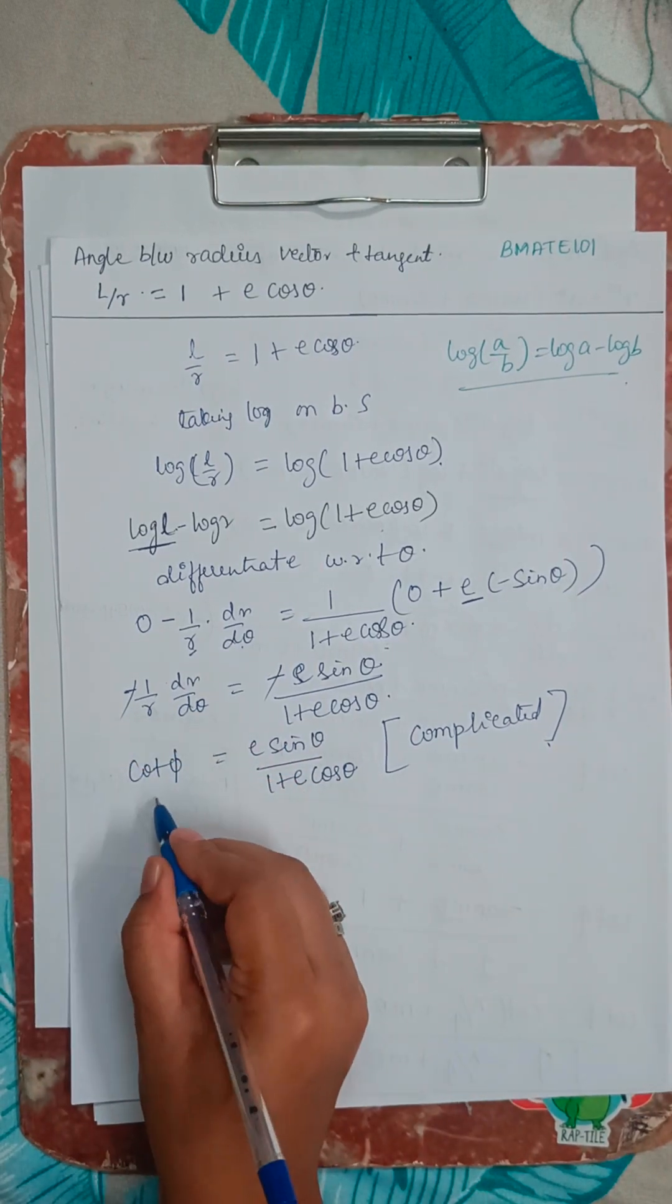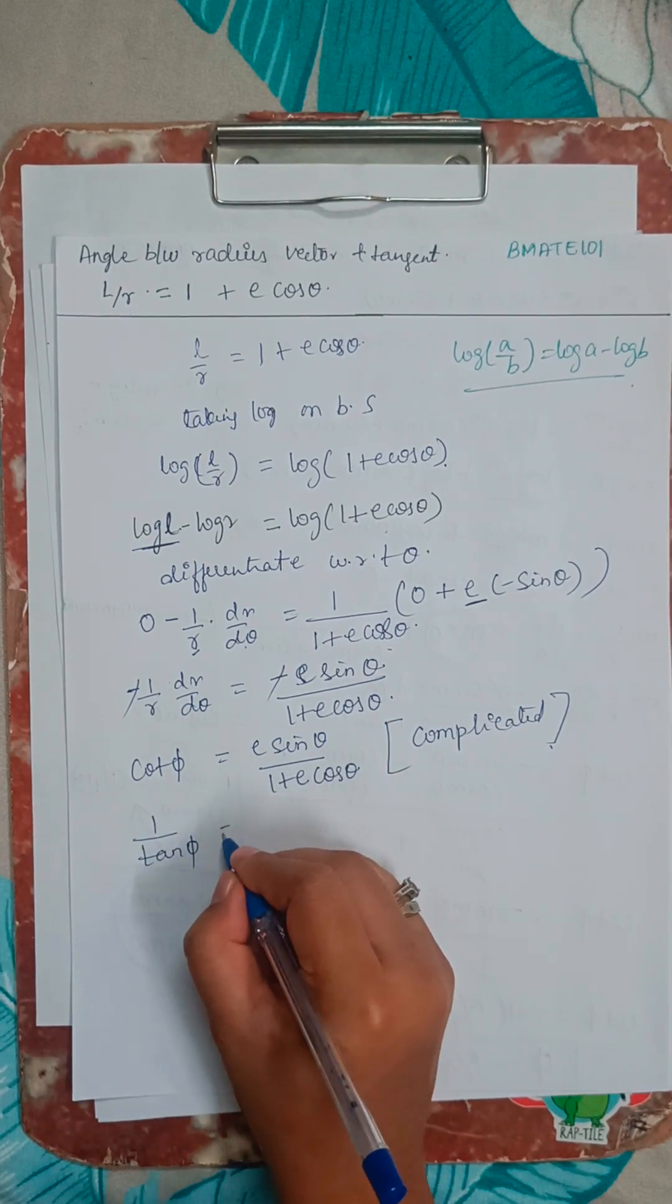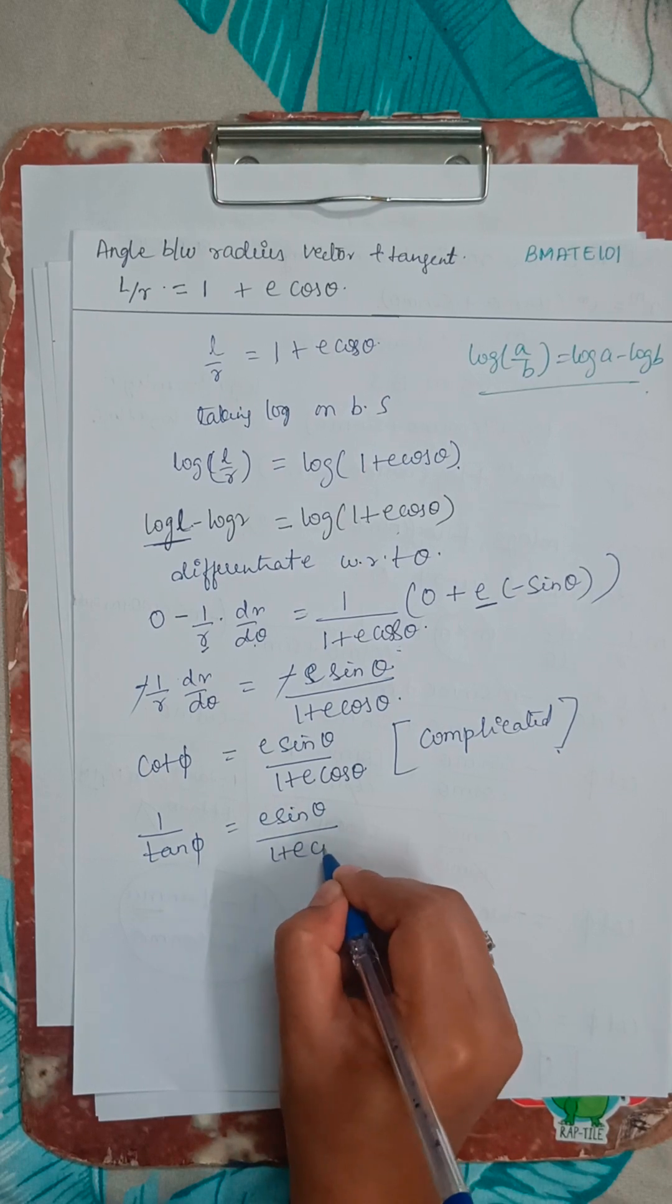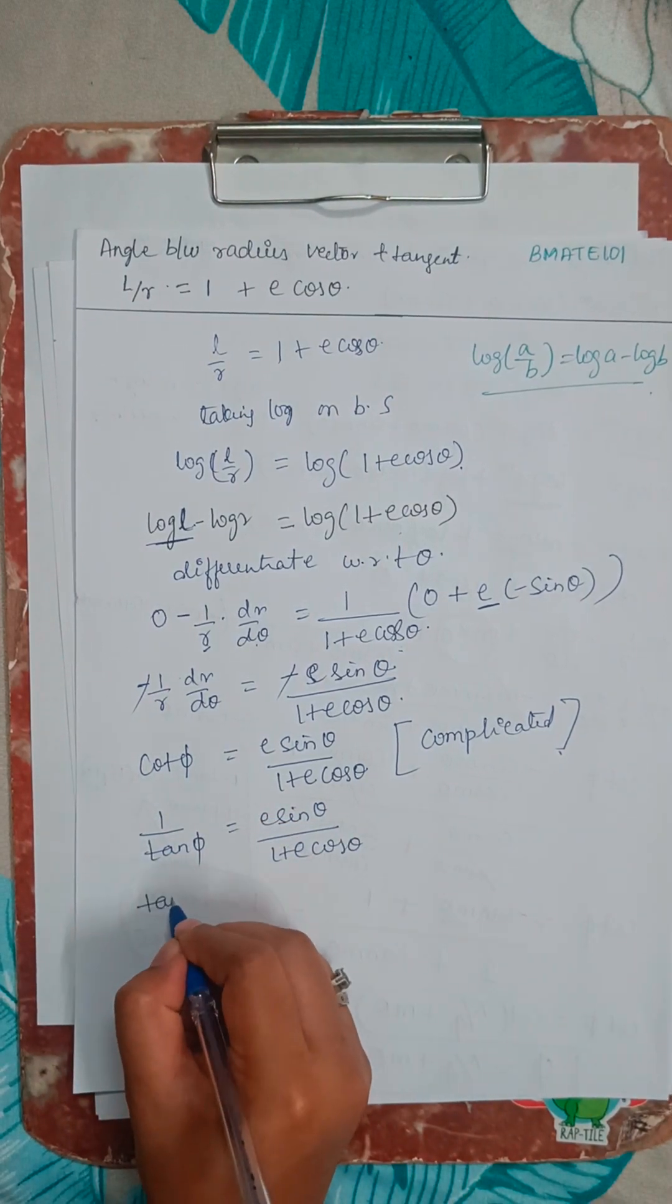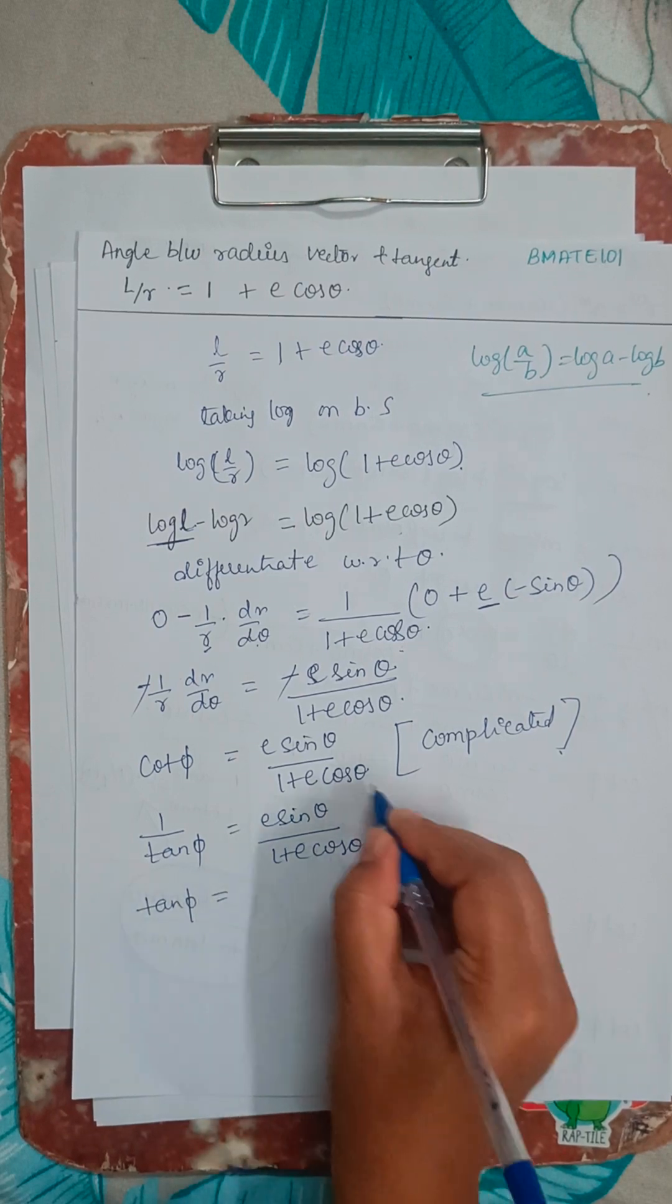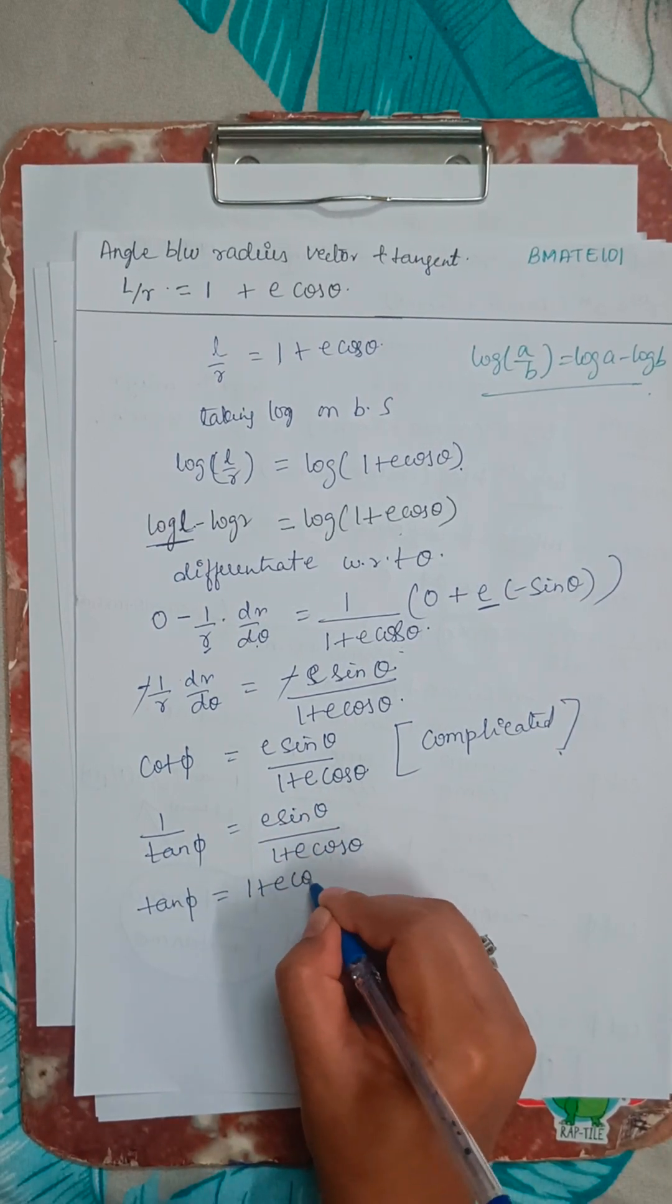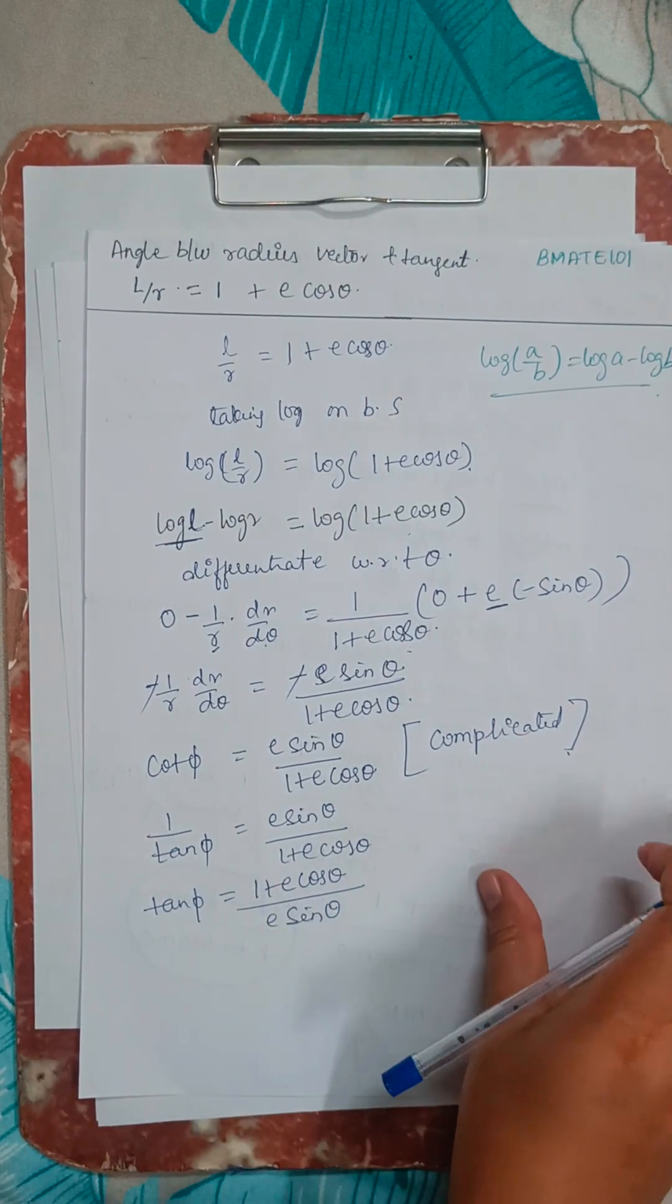So cot can be written as 1 by tan phi. Right? Here we have E sin theta divided by 1 plus E cos theta. So I will take tan to the numerator. So tan phi is going to be, it will get reciprocated. 1 plus E cos theta divided by E sin theta. Right?